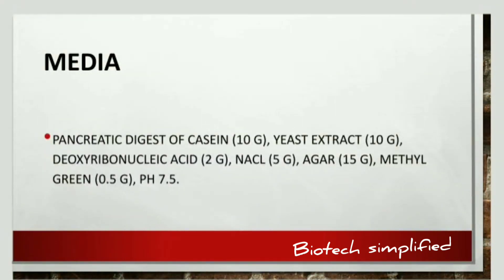Now let us discuss the media composition. The medium consists of: 10 grams of pancreatic digest of casein, 10 grams of yeast extract, 2 grams of deoxyribonucleic acid, 5 grams of NaCl, 15 grams of agar, and 0.5 grams of methyl green. The pH of the media should be maintained at 7.5.